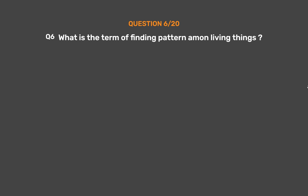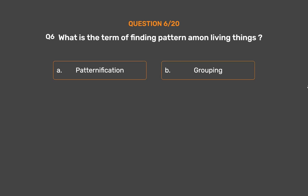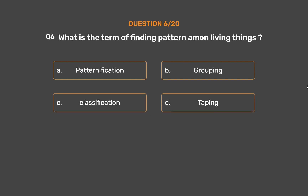Question number 6. What is the term for finding patterns in living things? Option A: Patternification. Option B: Grouping. Option C: Classification. Option D: Taping.